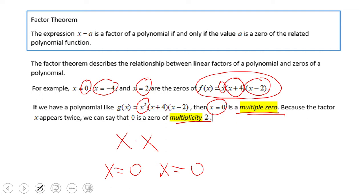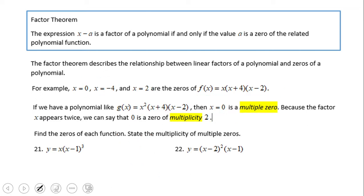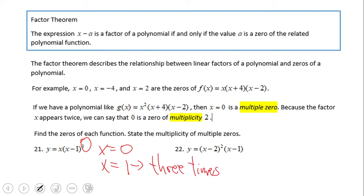So let's see two examples: find the zeros of each function and state the multiplicity of multiple zeros. For number 21, the zeros are x equals 0 and x equals 1, and because of the power of 3, we call x equals 0 multiplicity 3. For number 22, we have two zeros: x equals 2 and x equals negative 1, and x equals 2 is multiplicity 2.